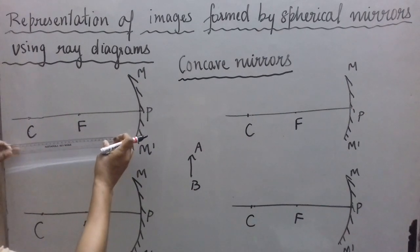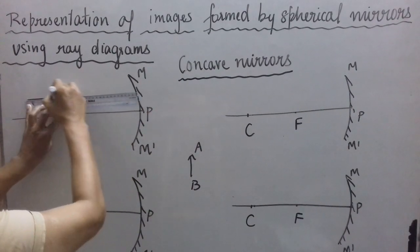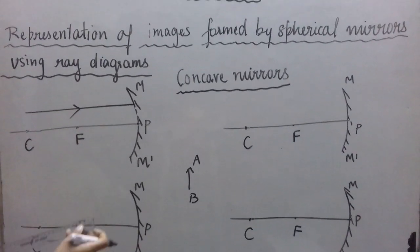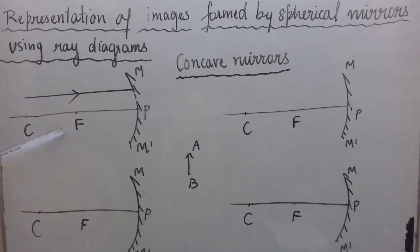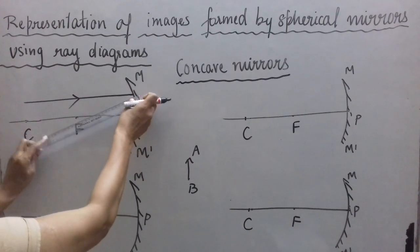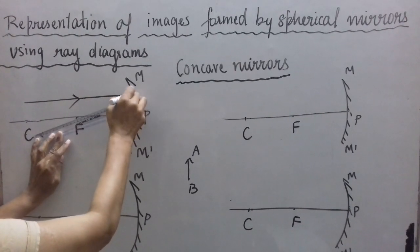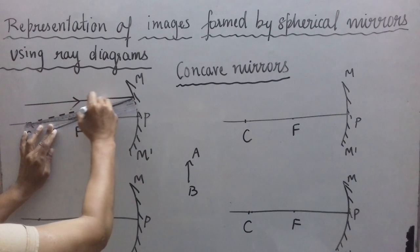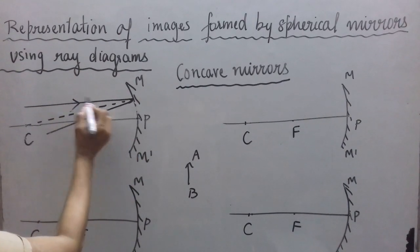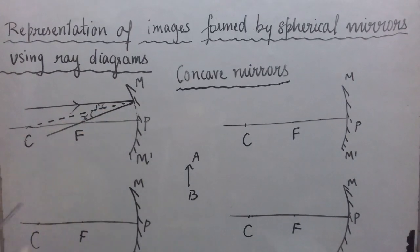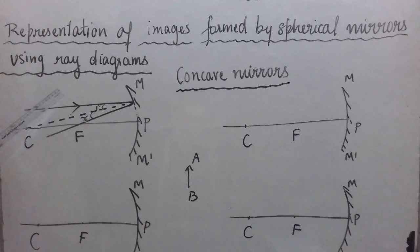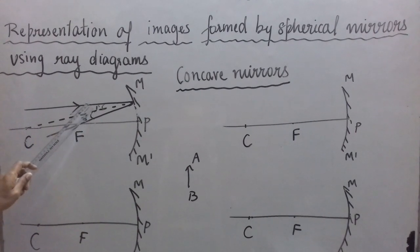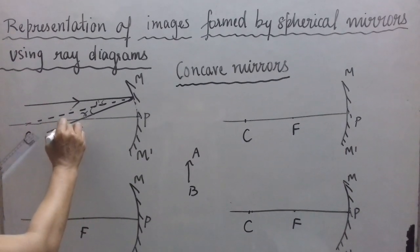Let us consider a ray which is parallel to the principal axis. We know by definition of focus that parallel rays meet at focus. It means if I take one parallel ray, I know it is going to pass through focus like this. I can also show that C and the point of incidence, if I draw a dotted line, this is the normal; this is the incident ray, this is I, and this is R. So whenever a ray is parallel to the principal axis in case of concave mirrors having small apertures, we can always draw the reflected ray passing through the focus without using a compass.